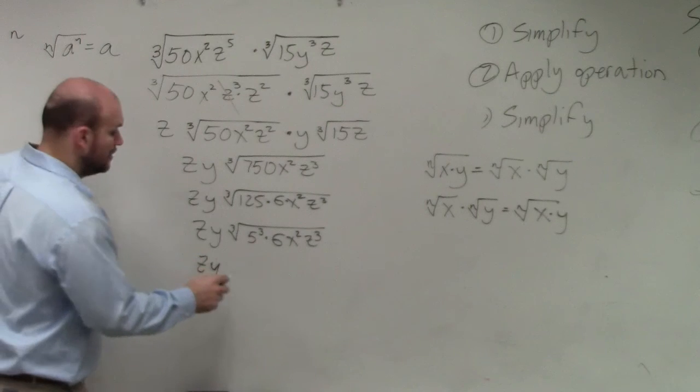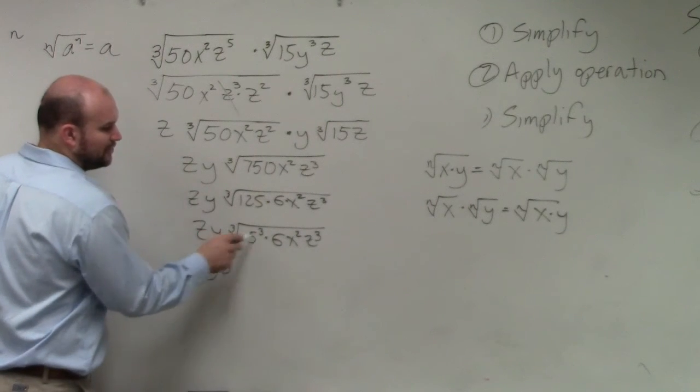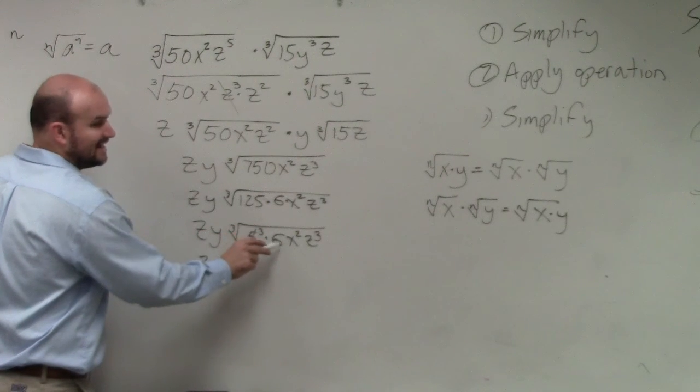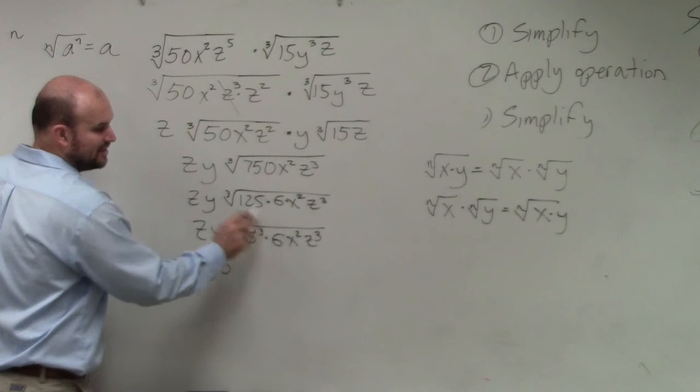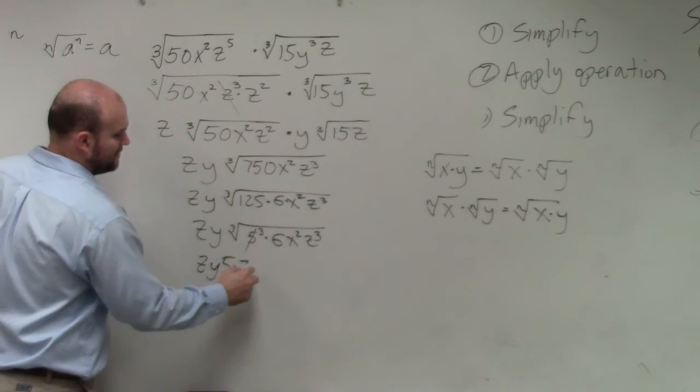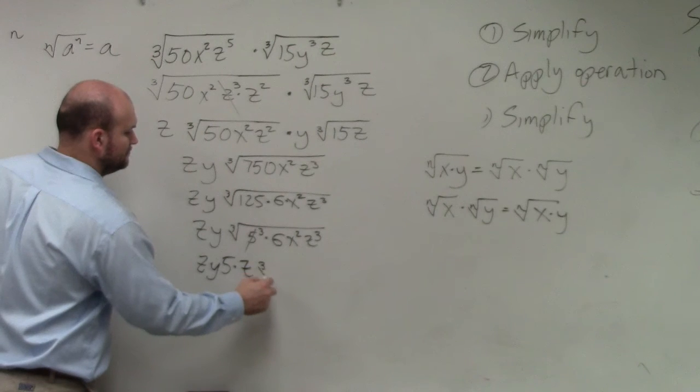The cube root of, I can't take the cube root of 6. I can't take the cube root of x squared. The cube root of z cubed is z. Wait. Is it 6 times x squared? Yep.